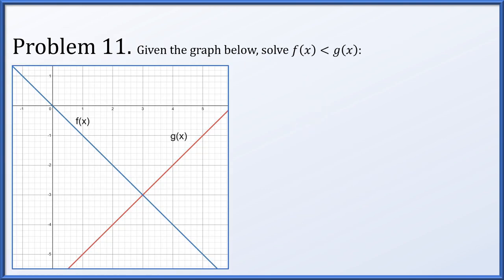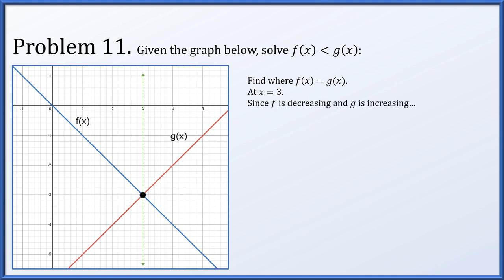Problem eleven: given a graph with two lines, f decreasing and g increasing, solve where f of x is less than g of x. We first find where they are equal — the graphs intersect at point (3, negative 3). Since f is getting smaller and g is getting bigger as we move right, f of x will be less than g of x everywhere to the right, meaning when x is bigger than 3.